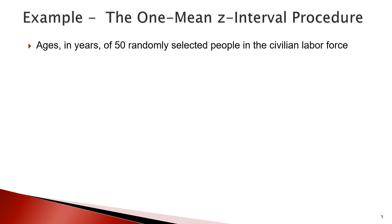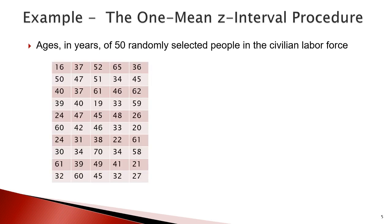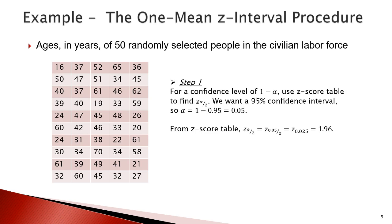Now let's look at an example. This table shows the ages of 50 randomly selected people in the civilian labor force. According to the first step of the one mean Z-interval procedure, we obtain the Z score of alpha over 2 for a 95% confidence interval. Since alpha is 0.05, the Z value of alpha over 2, that is 0.025, equals 1.96.